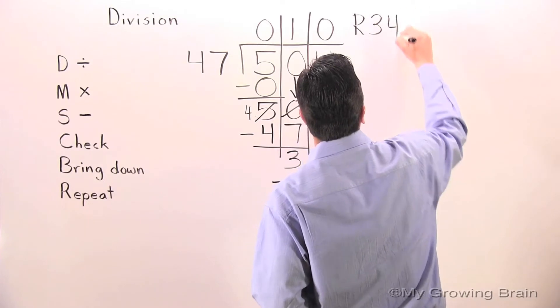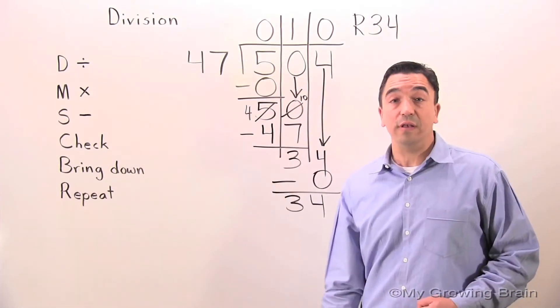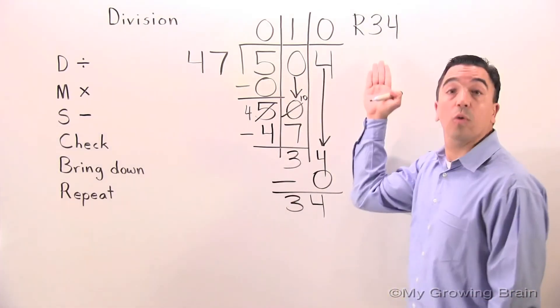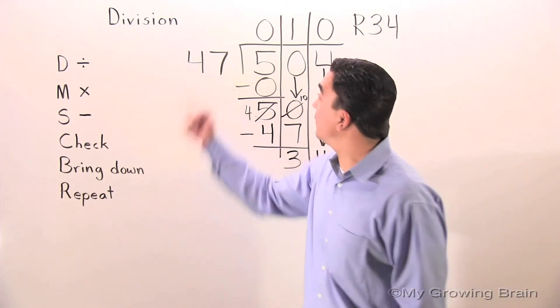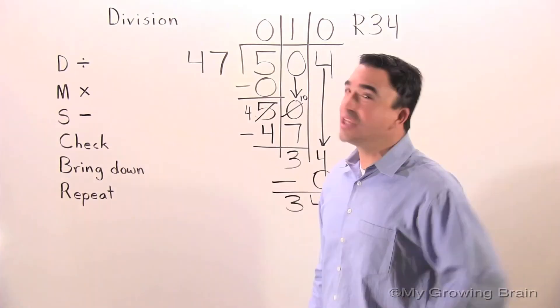Therefore, 504 divided by 47 gives us a quotient of 10, remainder 34. That concludes our lesson on division. Coach Mike at my growing brain. Challenge yourself.